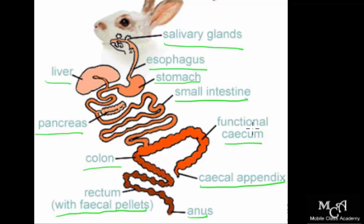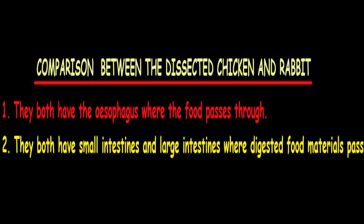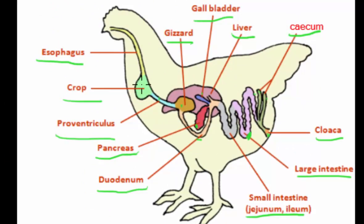Now the comparison between them: the chicken and the rabbit both have the esophagus. They both have small intestines and large intestines. In the chicken, food passes through the esophagus down to the crop, where enzymes act upon it, then to the proventriculus, then the pancreas which also secretes enzymes, down to the duodenum, then to the small intestine — the jejunum and ileum — and then it passes on to the large intestine.